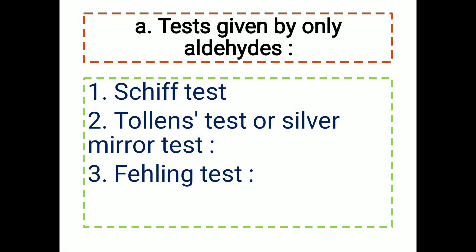Tests given only by aldehydes: aldehydes have the general formula RCHO, where a hydrogen atom is directly attached to the carbonyl carbon. This hydrogen atom is what allows aldehydes to act as reducing agents toward mild oxidizing agents, unlike ketones.